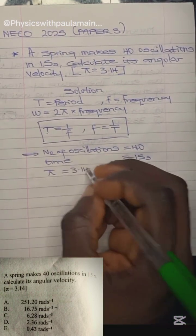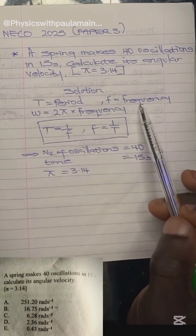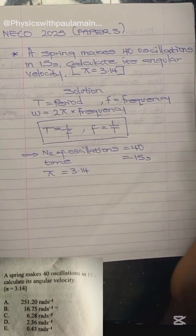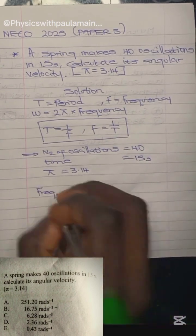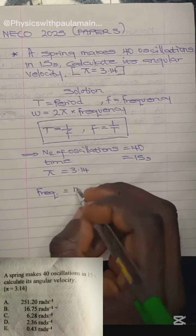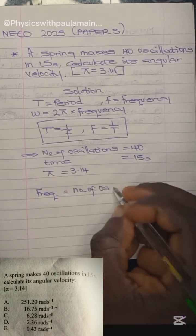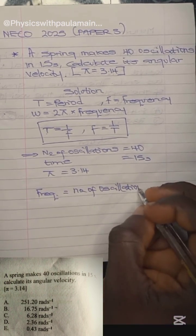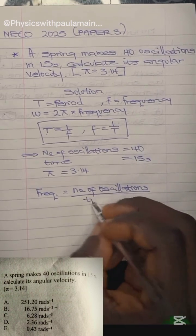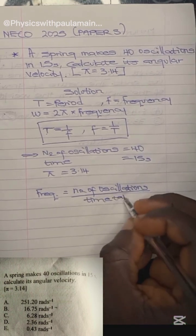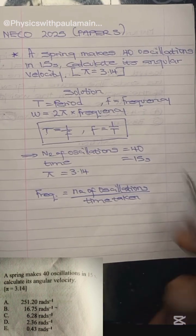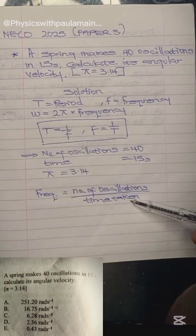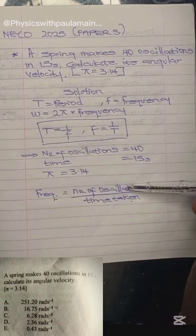Do not forget: the frequency of a body undergoing simple harmonic motion is defined as the number of oscillations a body makes in a particular time. So frequency equals number of oscillations over time. This is the actual formula for calculating frequency. The period is defined as the time taken for the body to execute a number of oscillations.